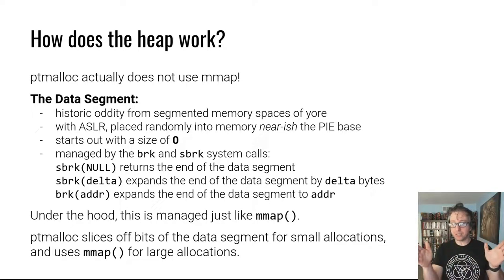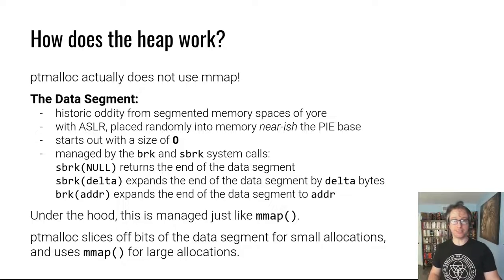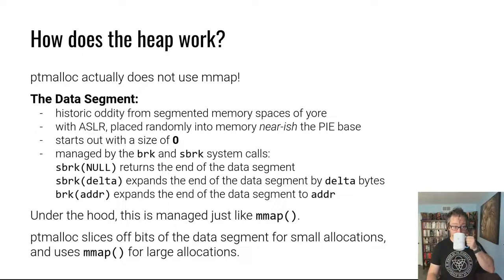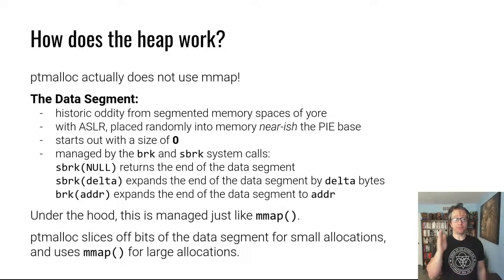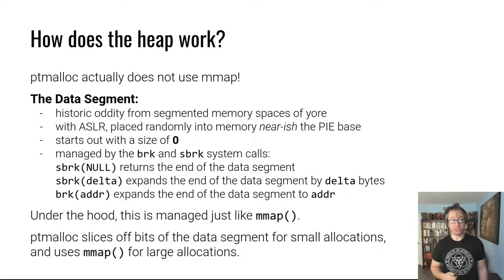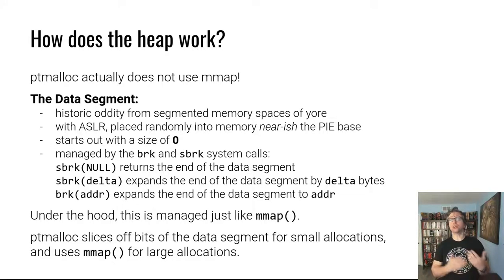With modern memory placement techniques, specifically address space layout randomization, the data segment is placed randomly somewhere near — but not right up against — the base of a position-independent binary. It starts out with size zero so it doesn't appear on your process's memory map. It's managed by two system calls: sbrk, which when passed null returns the current end address of the data segment, or when passed a number shifts the segment by that many bytes; and brk, which expands or shrinks the data segment to a given address.